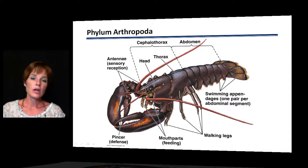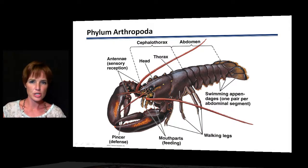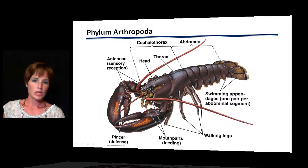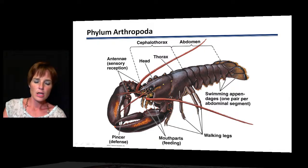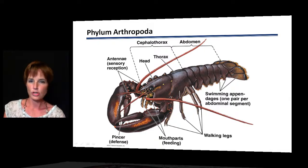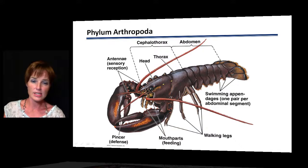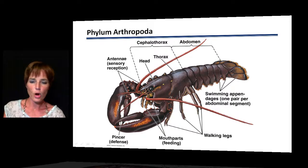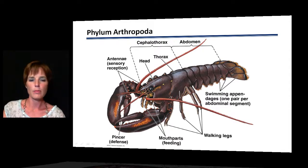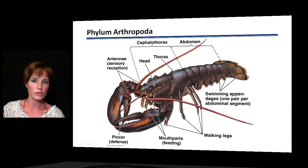A lobster is a good example of an arthropod with many jointed appendages. These are specialized for all different activities: pinchers for defense, two pairs of antennae for sensory reception, legs for walking, appendages for swimming, and various feeding mouth parts — all jointed appendages, which is where the group's name comes from.